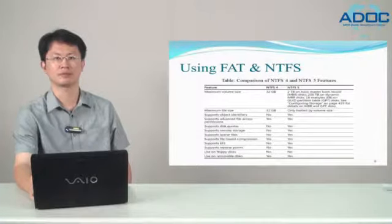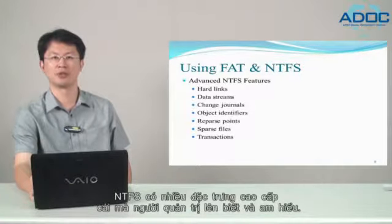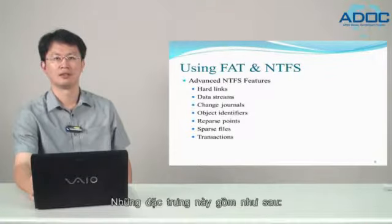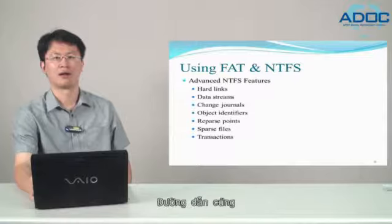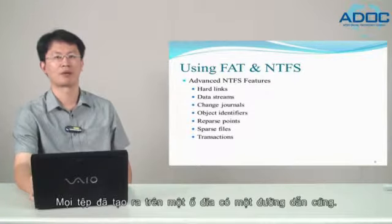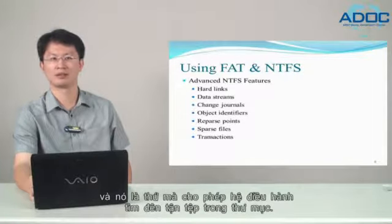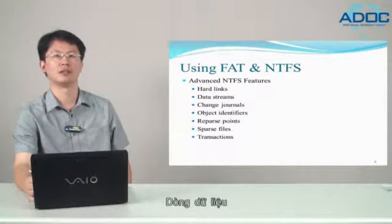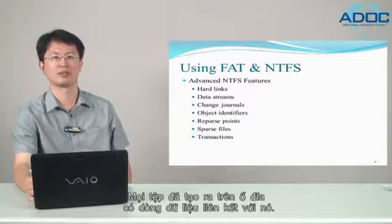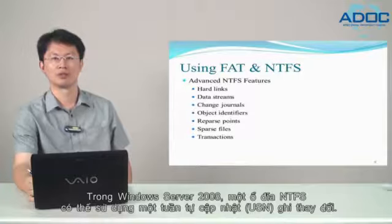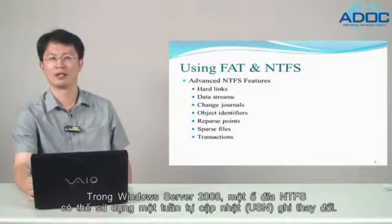NTFS has many advanced features that administrators should know about. These features include: hardlinks — every file created on a volume has a hardlink, which is the directory entry for the file and allows the operating system to find files within folders. Data streams — every file created on a volume has a data stream associated with it. Change journal — in Windows Server 2008, an NTFS volume can use update sequence number change journals.